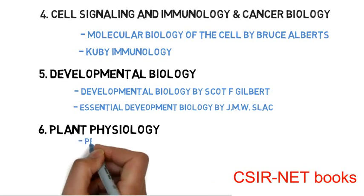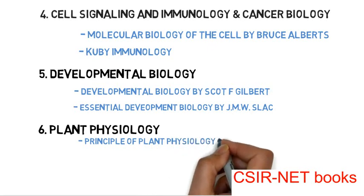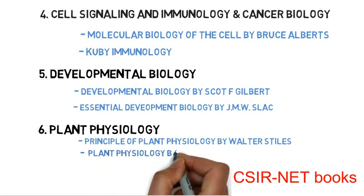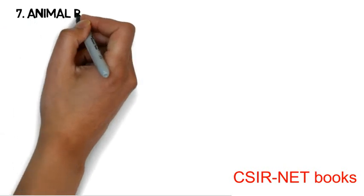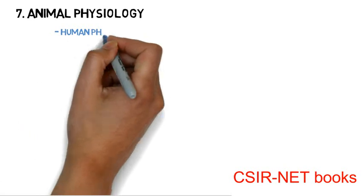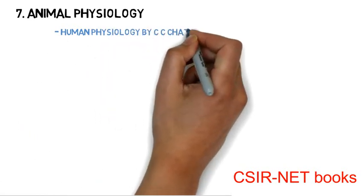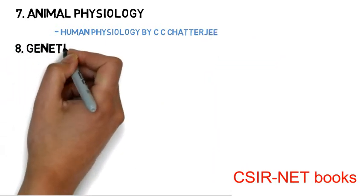For plant physiology, you have to follow Principles of Plant Physiology written by Walter and others, and the second book, Plant Physiology by Taiz and Zeiger. For the seventh topic, animal physiology, a very good book is Human Physiology by C.C. Chatterjee.